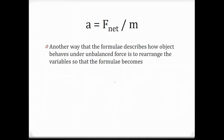Another way the formula describes how an object behaves under unbalanced force is to rearrange the variables so that the formula becomes: A equals F_net over M.